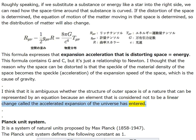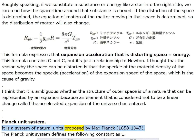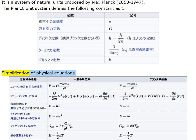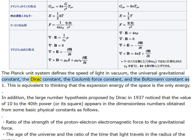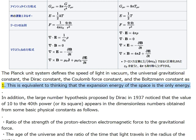The Planck unit system, proposed by Max Planck (1858–1947), defines the following constants as one: the speed of light in vacuum, the universal gravitational constant, the Dirac constant, the Coulomb force constant, and the Boltzmann constant. This is equivalent to thinking that the expansion energy of the space is the only energy.